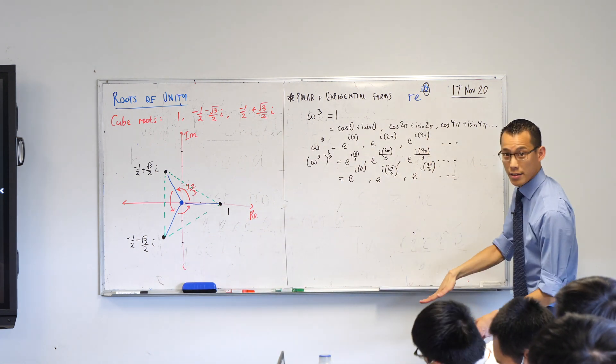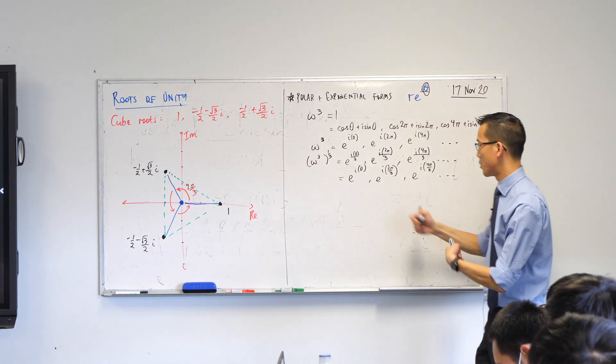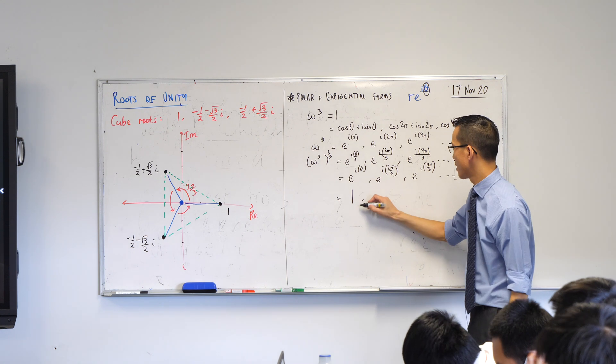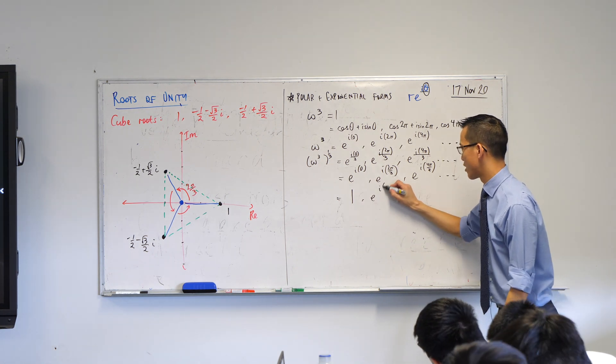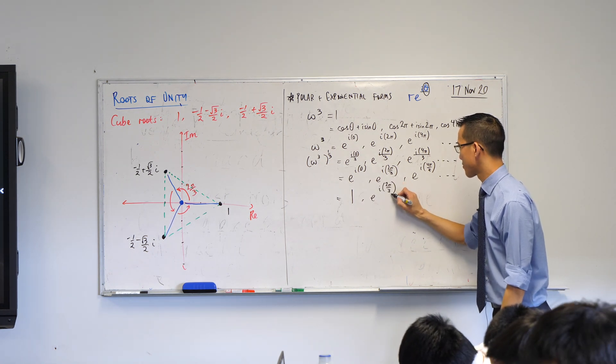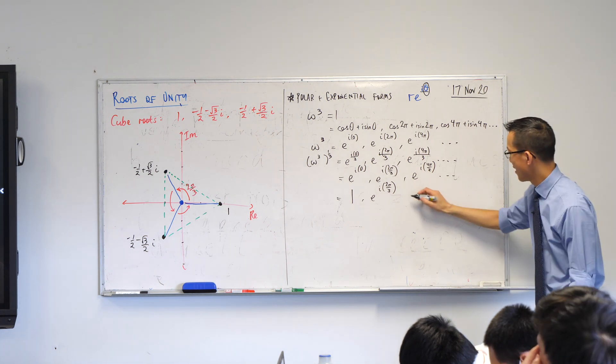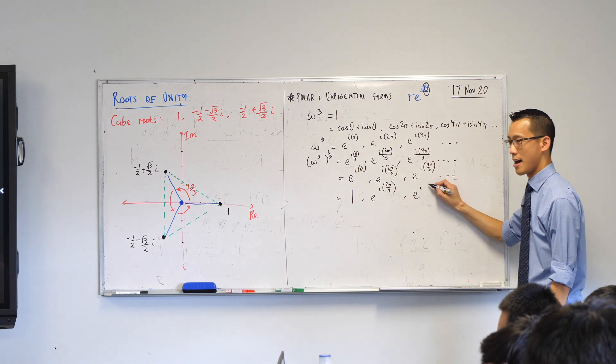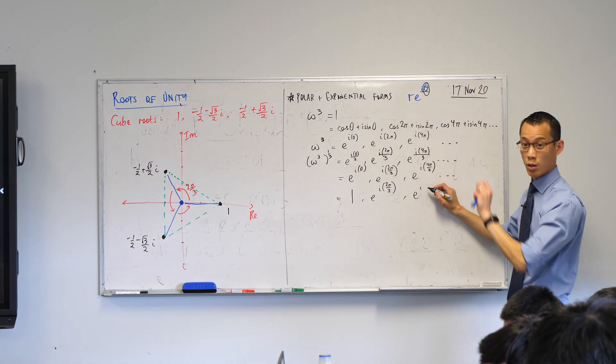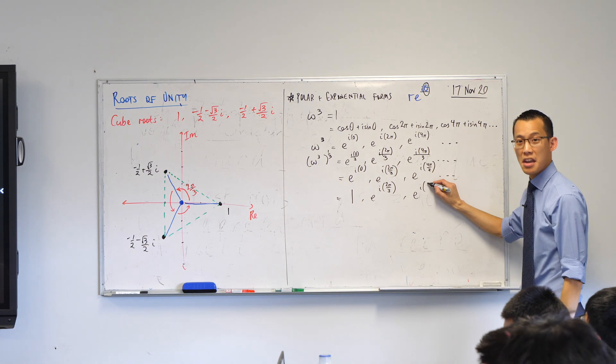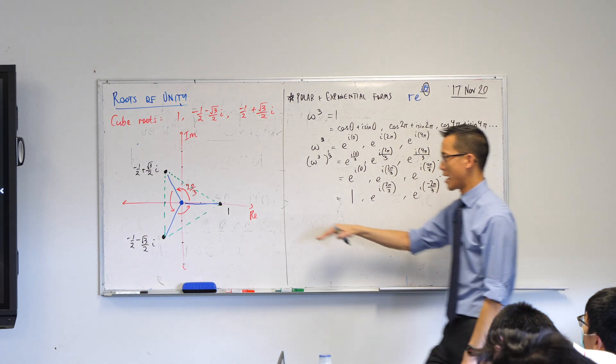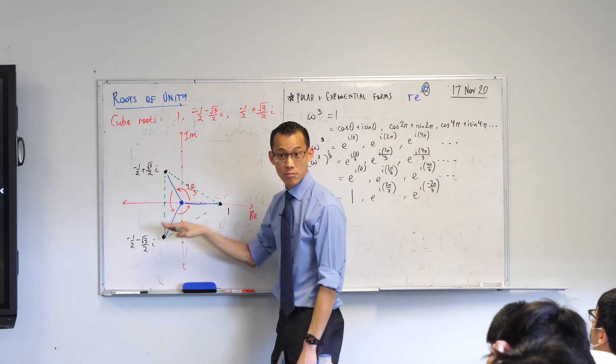So what I would do is I would say, this guy is just 1, I already knew what that was. This guy's already written in the correct form, principal argument and everything. And then lastly here, I'm going to write this as e to the i, not positive 4 pi on 3, that's anti-clockwise. I'm going to write it as negative 2 pi on 3, because that's coming around the other way. Can you see that?